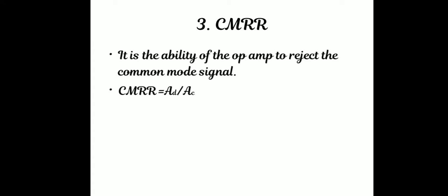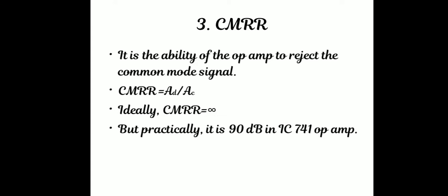CMRR equals AD divided by AC. The ideal value of CMRR is infinity, meaning the common mode signal should be completely rejected. But in practice, this is not possible. For IC741, the practical value is 90 decibels.